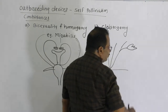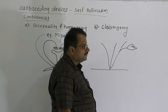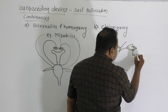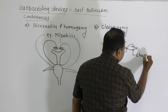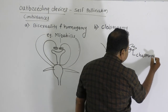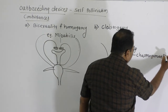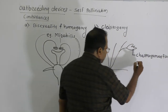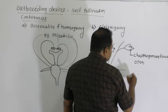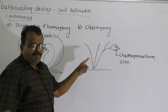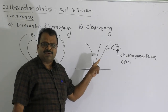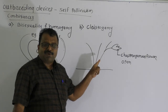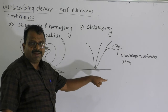In Commelina bengalensis, the aerial branches also have flowers. The flowers that develop on aerial branches are called chasmogamous flowers — meaning open flowers. Because these flowers are open, the chances of cross-pollination are higher, so cross-pollination is also an option for this plant.